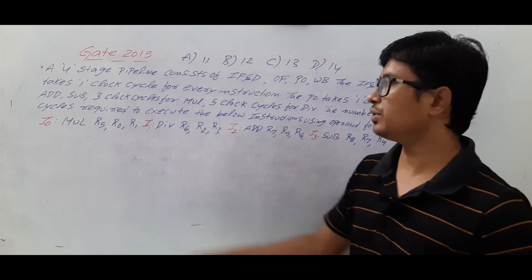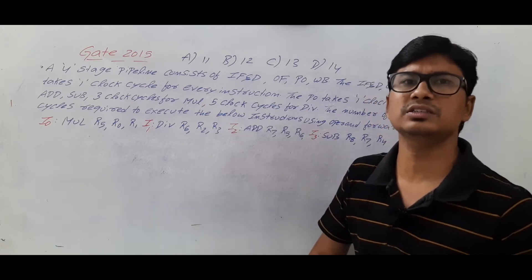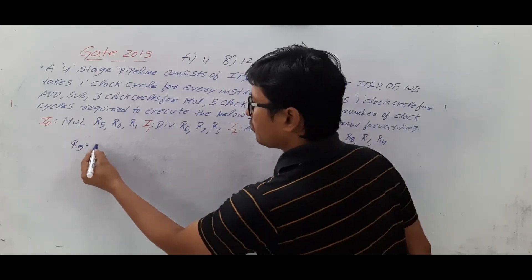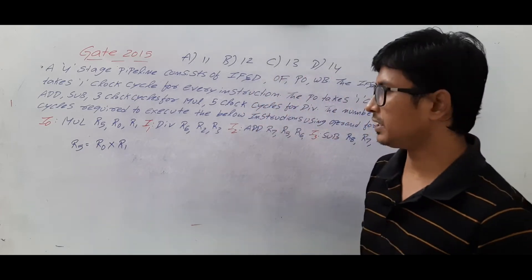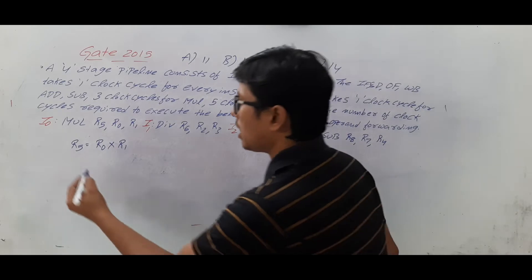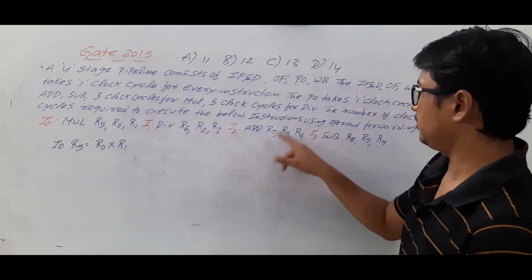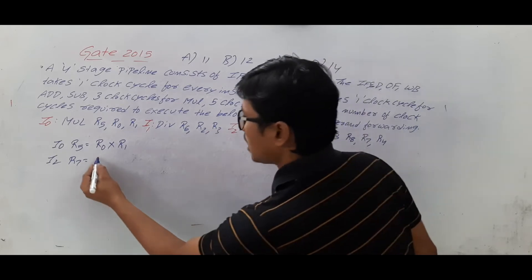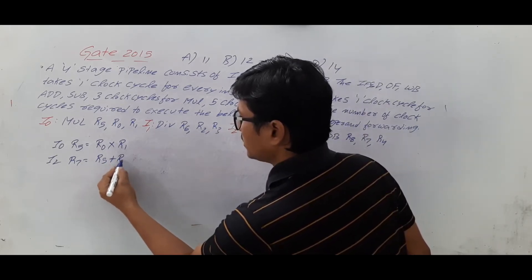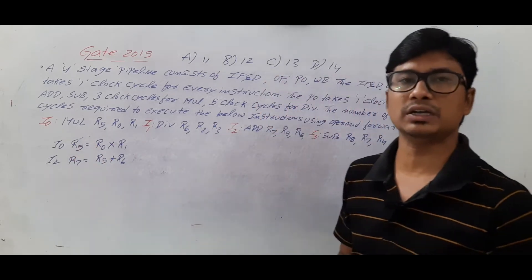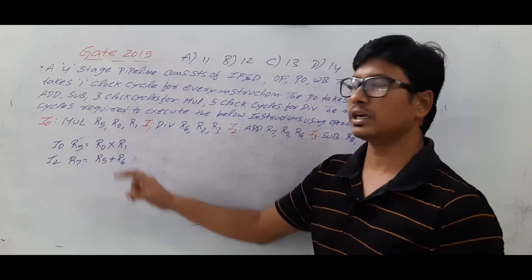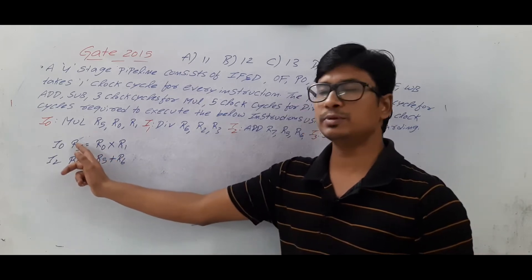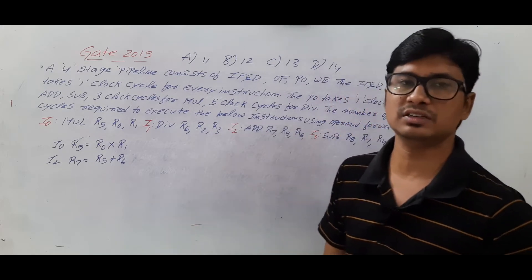First I need to find whether we have any read after write data hazard. For example, instruction I0 has r5 = r0 × r1 — you perform the multiplication between r0 and r1 and the result is stored in r5. Instruction I2 has r7 = r5 + r6. We identify this using the concept of domain and range: for I0, the domain (source operands) is r0 and r1, and the range (destination) is r5.